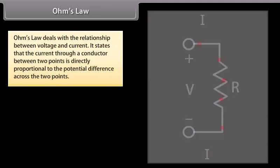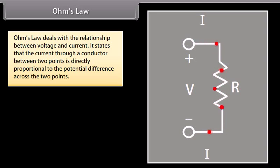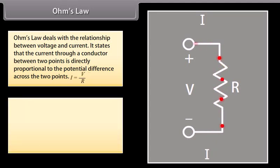Ohm's Law. Ohm's law deals with the relationship between voltage and current. It states that the current through a conductor between two points is directly proportional to the potential difference across the two points.